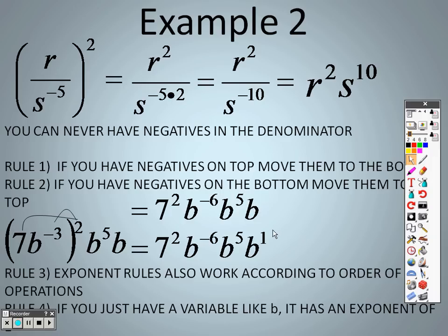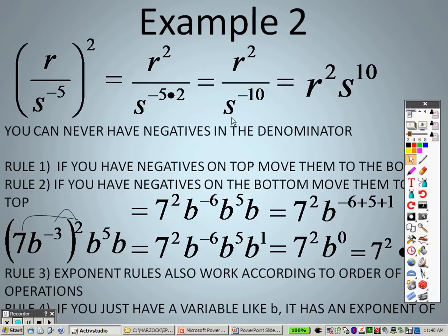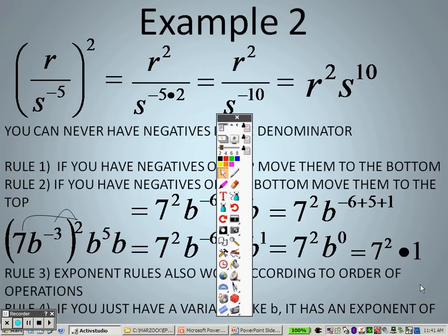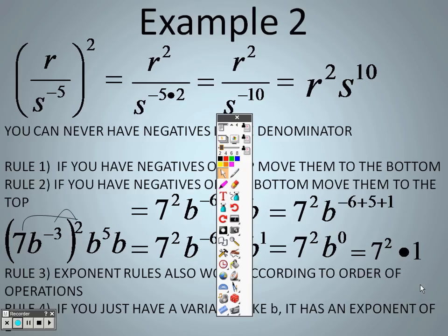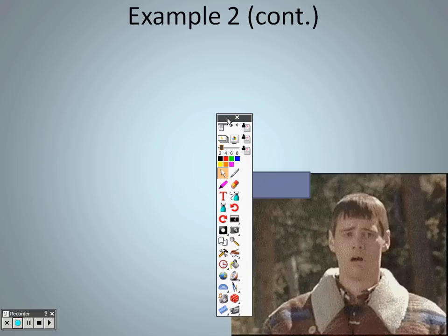This b is like saying b to the first power. I can have a whole string of b's here. It doesn't matter, there's no parentheses there at all. All I'm going to do is add them all together. So negative 6 plus 5 plus 1, and I end up with b to the 0, because negative 6 plus 5 plus 1 is 0. Anything that is 0 is 1, so really I have 7 squared times 1, which is the same as just 7 squared. And 7 squared is 49, so your answer is 49.